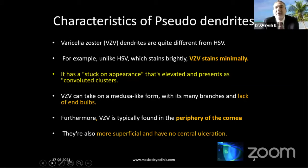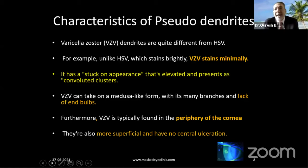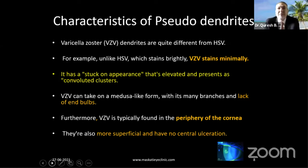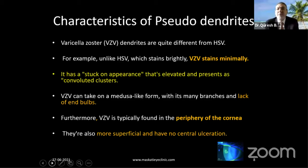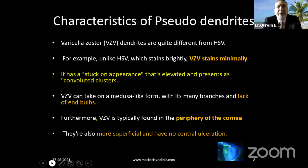Some characteristics differentiate them from herpes dendrites. For varicella zoster dendrites — rather than calling them pseudodendrites — they stain very minimally and don't show the bright green staining you get with true HSV dendrites. They have a stuck-on appearance, unlike true dendrites where the epithelium heaps up on the sides with a central ulcer down to the basement membrane. Varicella zoster dendrites look as if they are stuck to the top of the cornea, like a little bump glued on. They can take on a medusa-like form with many branches but lacking end bulbs. They are typically found in the periphery of the cornea, unlike HSV which can be anywhere but usually in the center. They are more superficial and lack the central ulcer.